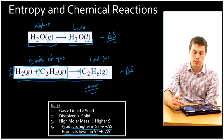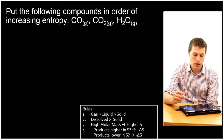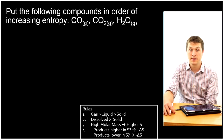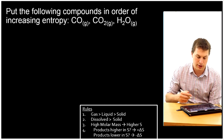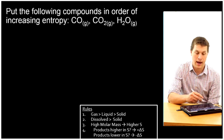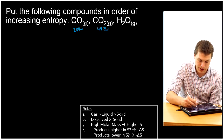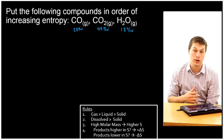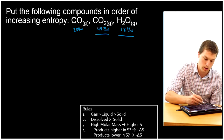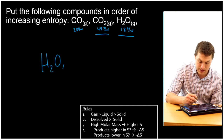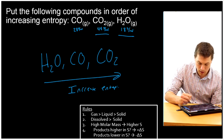Now let's apply these rules to a few problems. First: put the following compounds in order of increasing entropy — carbon monoxide, carbon dioxide, and water. The phases are all the same — all gas — so I need to think about molar mass. CO has a molar mass of about 28 g/mol, CO2 is 44 g/mol, and water is 18 g/mol. The one with the most atoms is CO2, which is the highest entropy, and water is the lowest. So in order of increasing entropy: H2O < CO < CO2.